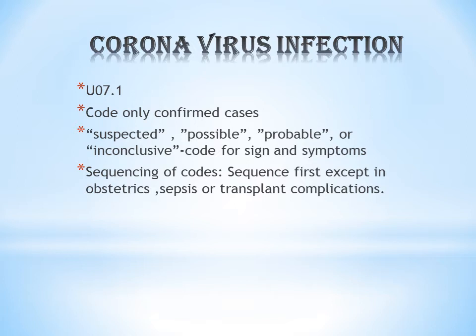Regarding sequencing of codes: sequence U07.1 first, except in obstetric, sepsis, or transplant complication cases. Obstetrics, sepsis, and transplant codes always have sequencing priority. Other than those cases, you have to give U07.1 always as the primary code.